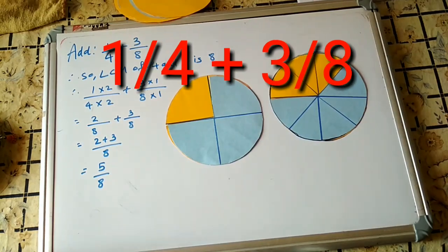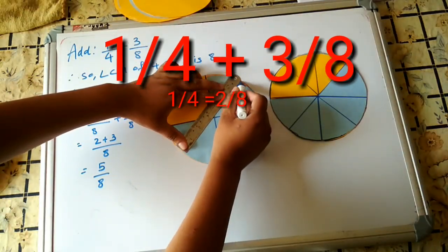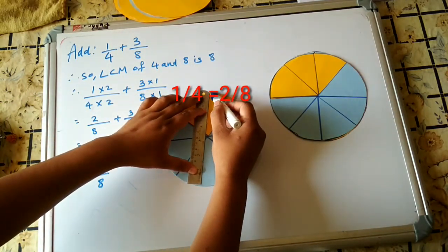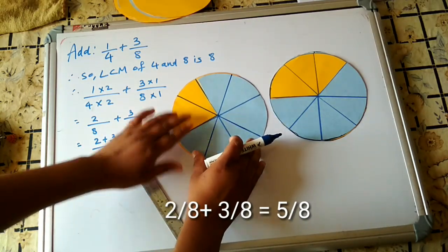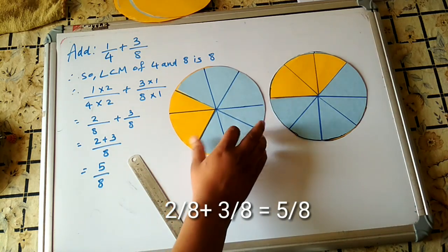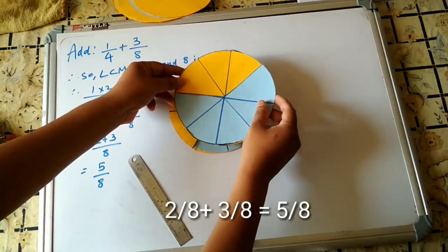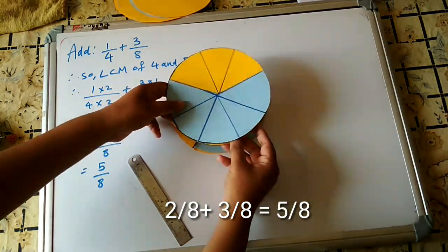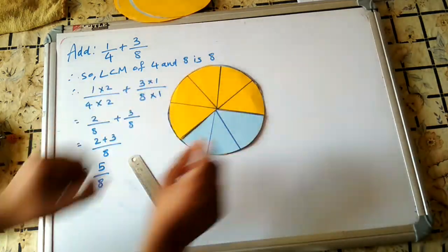Now we will see 1/4 + 3/8 in activity form. We have to make it a like fraction, which means dividing the circle into 8 equal parts. So 1/4 is equal to 2/8. Now if we add 2/8 and 3/8, we get 5/8, as shown in this activity.